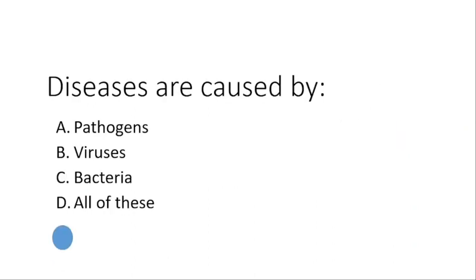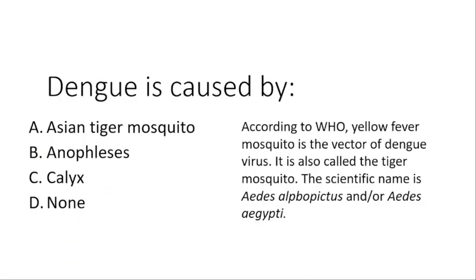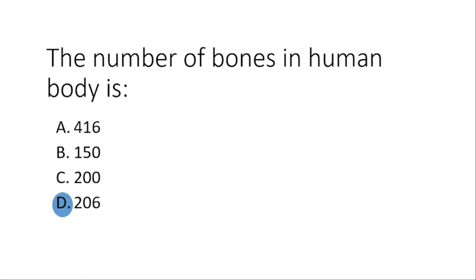Diseases are caused by pathogens, viruses, bacteria — all of these. All three options may be responsible for diseases. Antibiotics are used to fight against — the correct answer is bacteria. Dengue is caused by the Asian tiger mosquito. According to the World Health Organization, the yellow fever mosquito is also a dengue vector, also called the tiger mosquito, with the scientific name Aedes albopictus, also known as Aedes aegypti. The number of bones in the human body is 206.